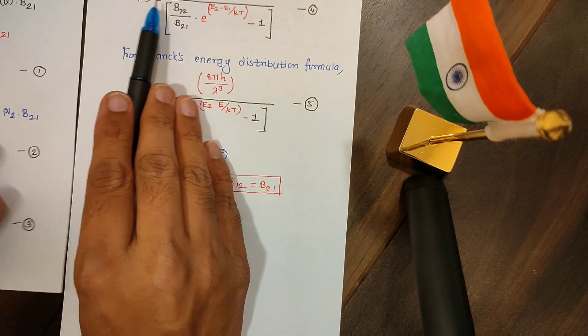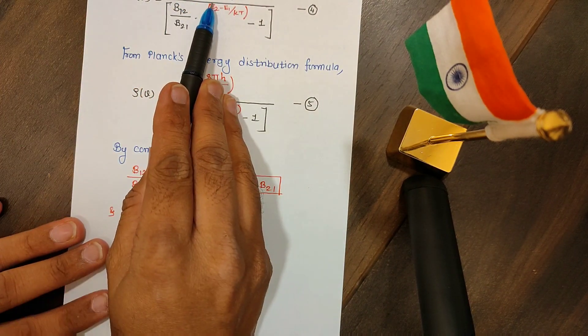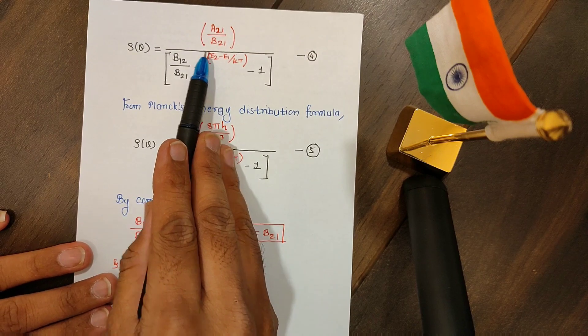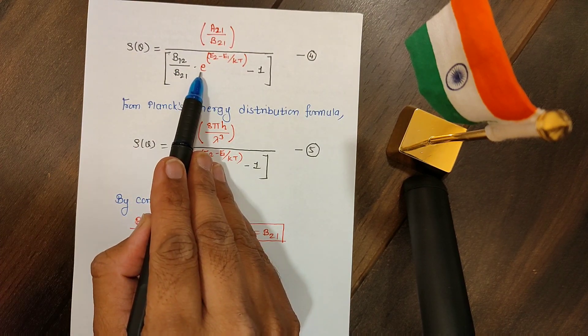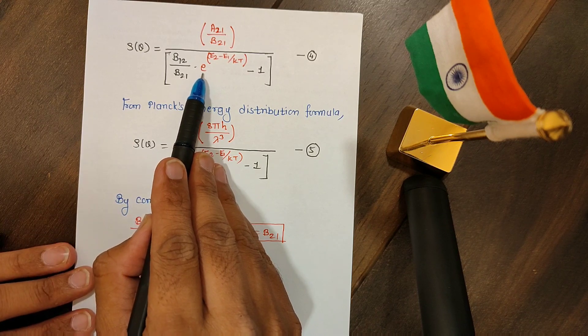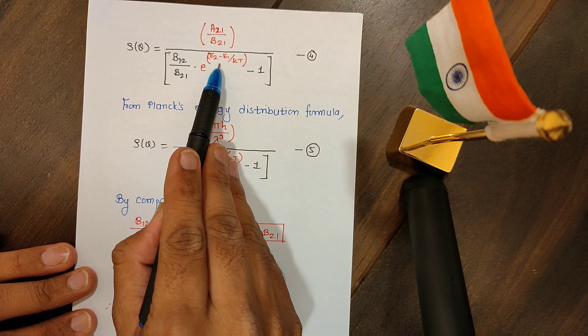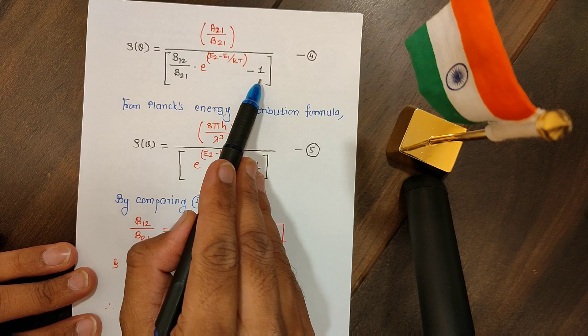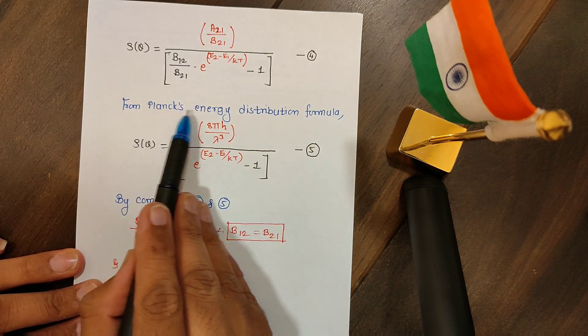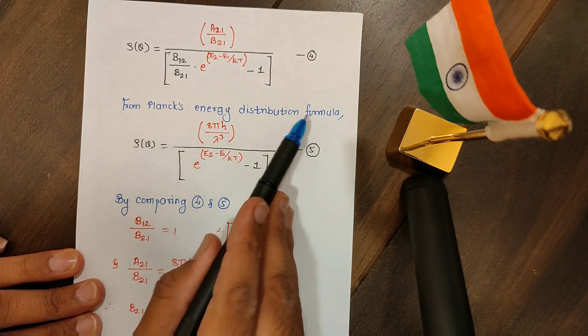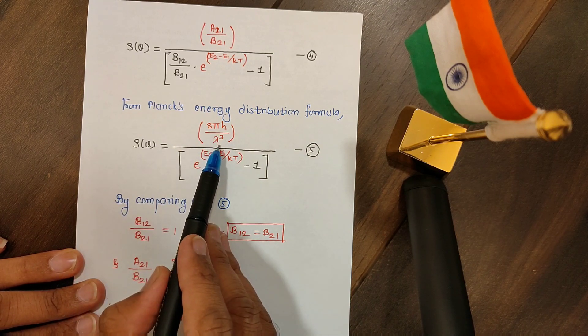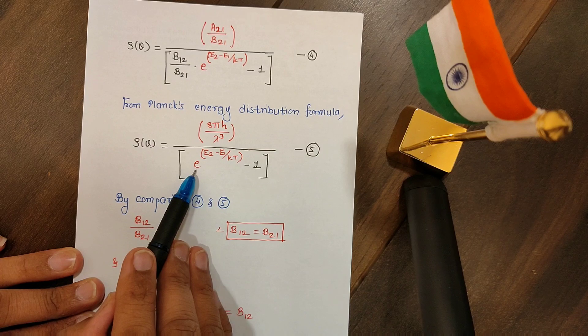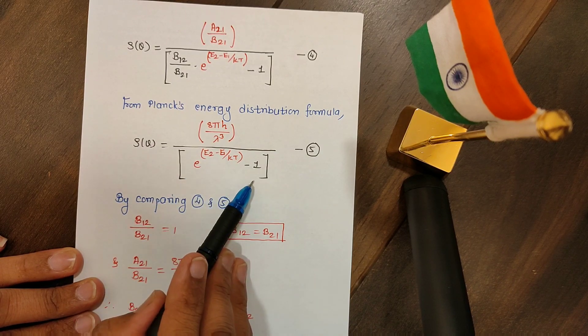With this substitution, we will get rho equals a21 over b21 divided by b12 over b21 into, see that ratio of n1 by n2, I am replacing by e raised to E2 minus E1 over kT minus 1. Now we have Planck's energy distribution formula, which says rho equals 8 pi h over lambda cubed, the whole divided by e raised to E2 minus E1 over kT minus 1.